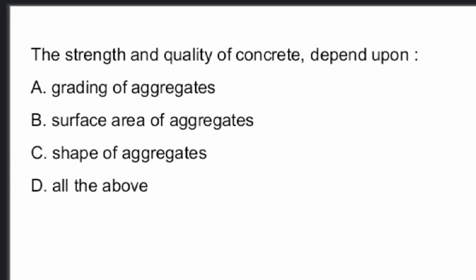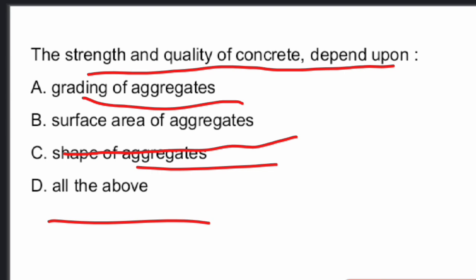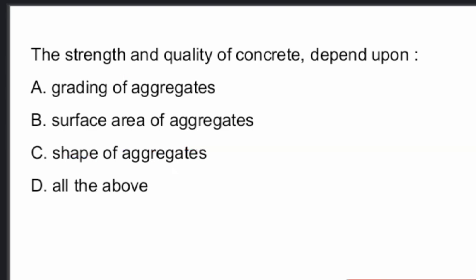Next question: The strength and quality of concrete depends upon what? The options are grading of aggregates, surface area of aggregates, and shape of aggregates. The answer is Option D — all of the above. The strength and quality of concrete depends upon grading, surface area, and shape of aggregates.